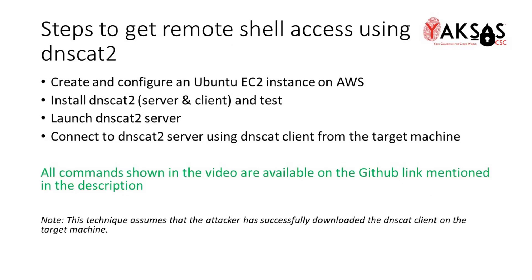Following are the high level steps I will be performing to demonstrate DNS-CAT2. First, I will create and configure an Ubuntu EC2 instance on AWS. This would give us a publicly accessible attacking machine with a fixed IP address. We will then install DNS-CAT2 on this machine and test our setup. Next, we will run the DNS-CAT2 server on this machine and connect to it using DNS-CAT client from the target machine. Please note that this technique assumes that the attacker has successfully downloaded the DNS-CAT client on the target machine. All commands shown in this video are available on the GitHub link mentioned in the description.